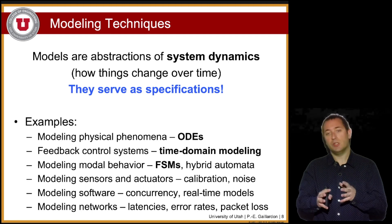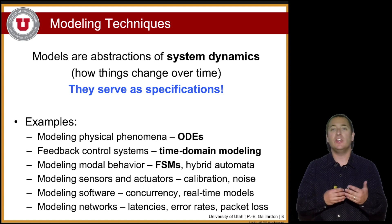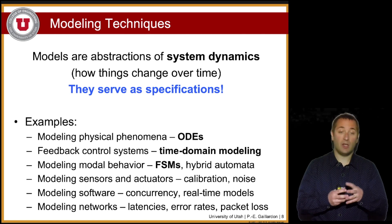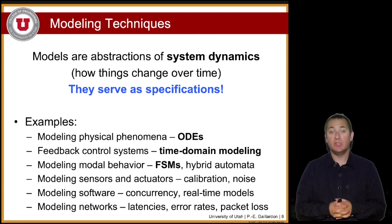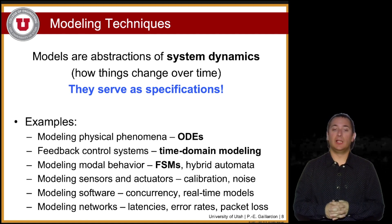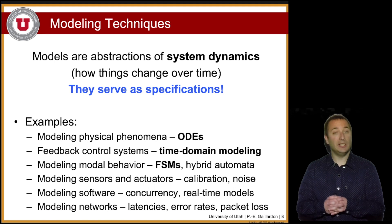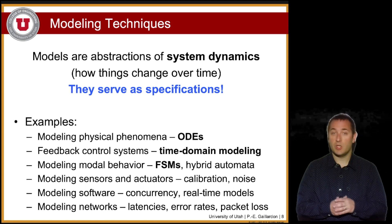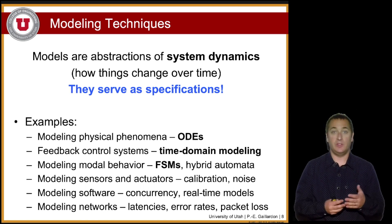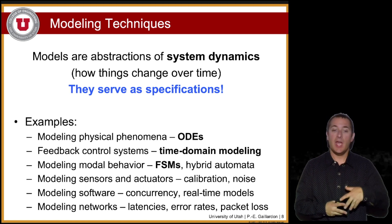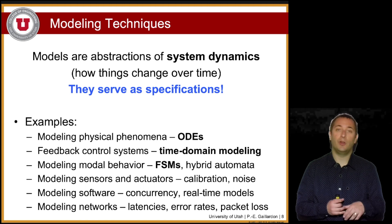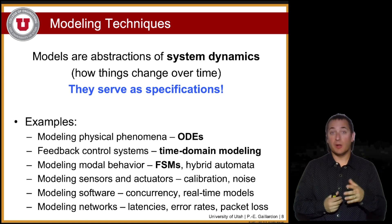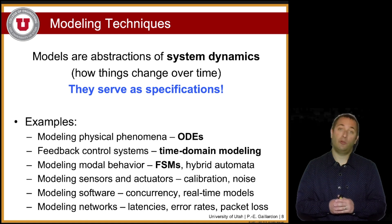Models are abstractions of the system dynamics — meaning how things change over time. There are multiple examples of models. You might decide to model physical phenomena using differential equations. You might want to model control systems using time domain modeling, Laplace transforms, and so on. You might want to model discrete behaviors using finite state machines, hybrid automata, and that kind of thing. In the context of this class, we're going to look at differential equations, time domain modeling, as well as finite state machines.